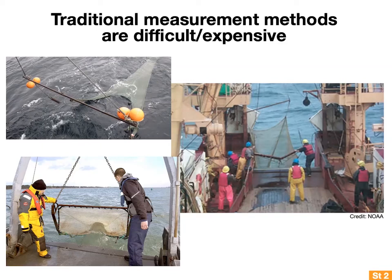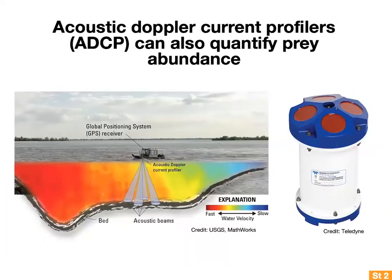This observational gap exists in part because traditional methods such as trawling and nets are difficult, time-consuming, and expensive. It would be really valuable to have a cheaper and more efficient way to quantify prey abundance. It turns out there kind of is already: acoustic data from acoustic Doppler current profilers, or ADCPs, are routinely gathered by all research cruises and most moorings, but their vast biological potential hasn't been realized yet by fishery scientists, because up until now ADCP data has usually been used just to quantify the speed and direction of currents.